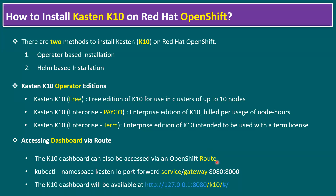As an alternative, the same route can be created via command line using kubectl. Use kubectl port-forward in the Kasten namespace, specifying service/gateway with port 8080:8000. This is another method to create the dashboard route via command line.